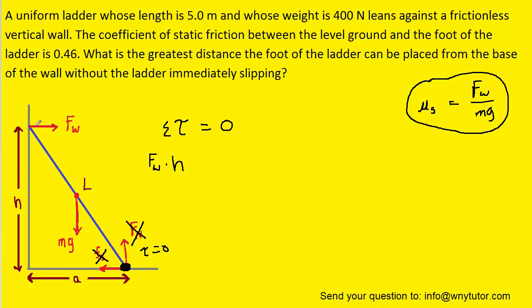Also note that Fw, because it's pushing to the right, would try to cause the ladder to rotate in a clockwise fashion about this pivot. So that actually means this torque is negative.